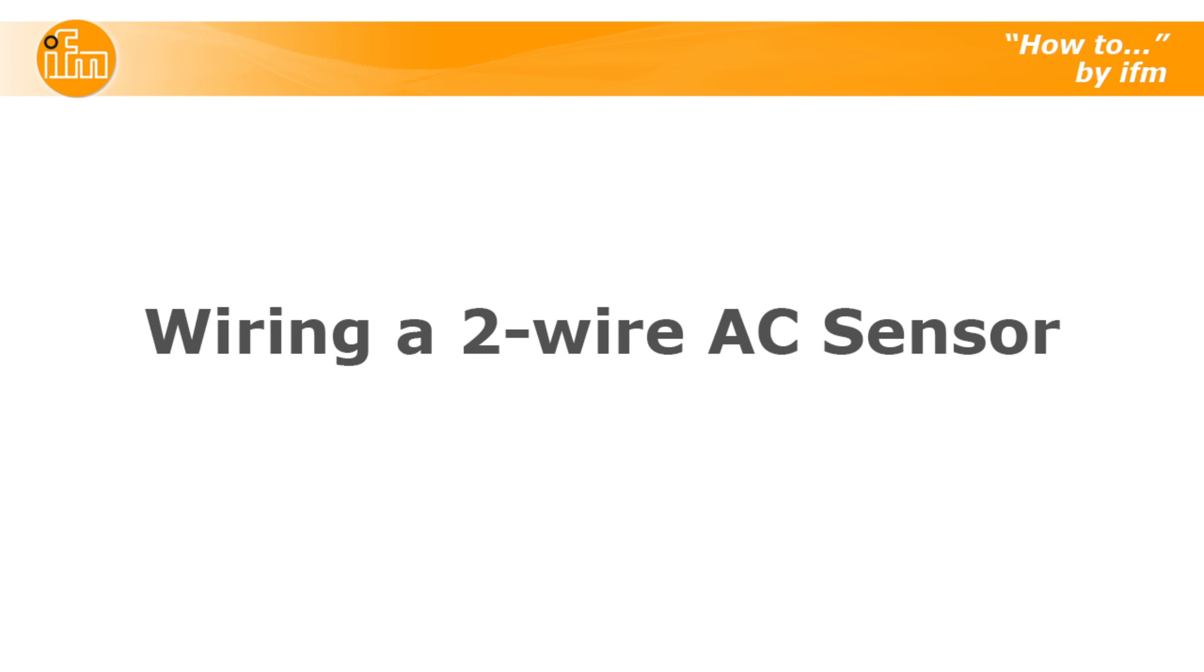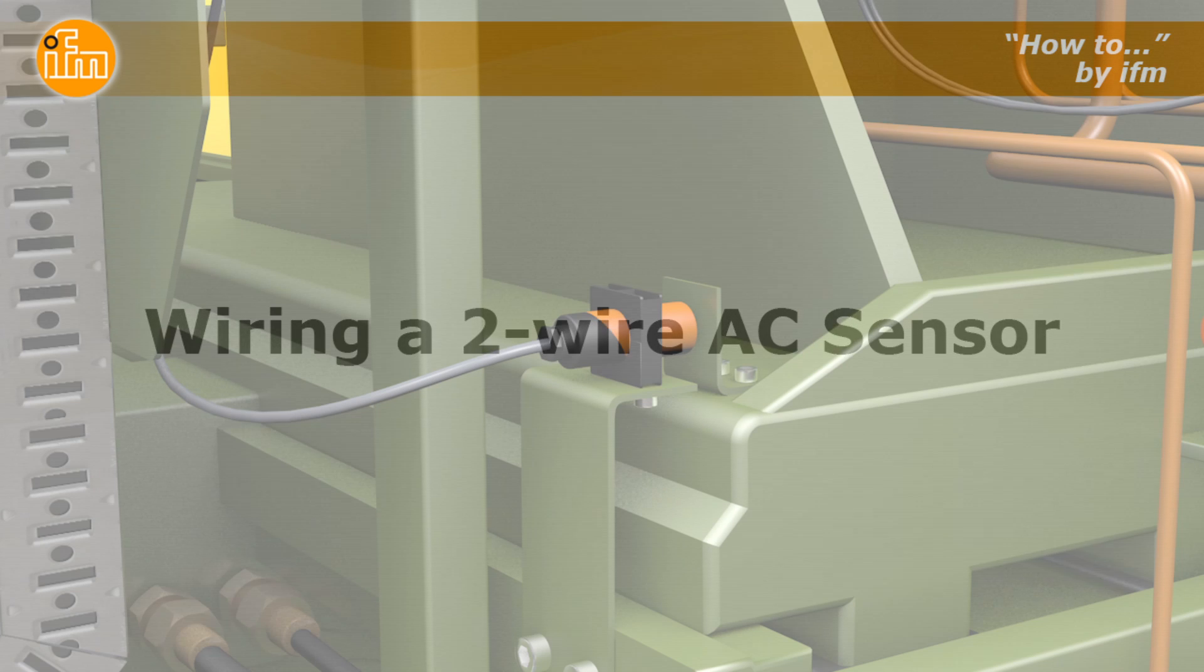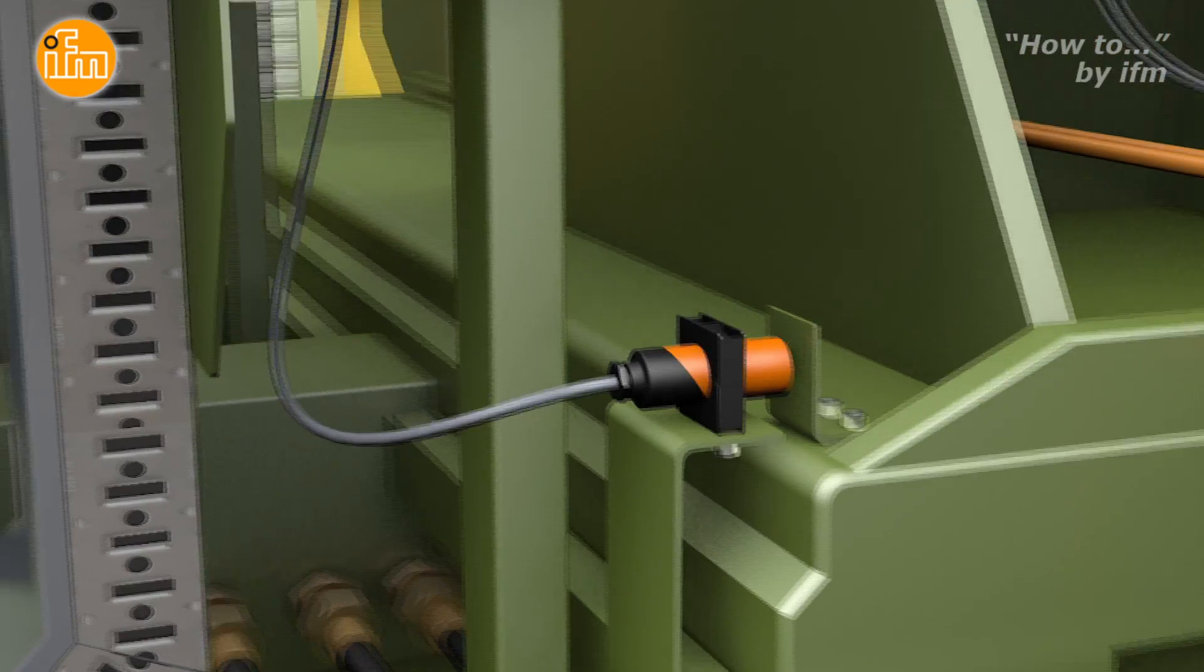Wiring a two-wire AC sensor is not a complicated task. However, if done incorrectly, the switch will be damaged, which can be very costly.